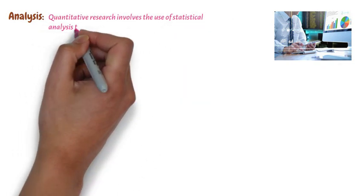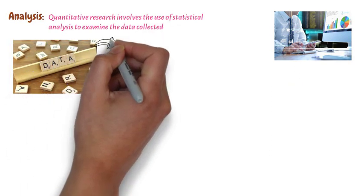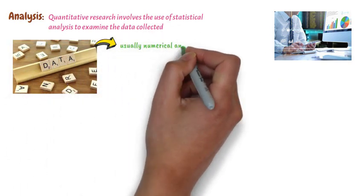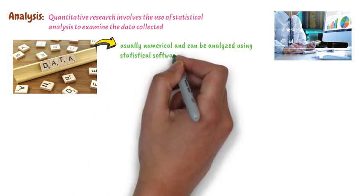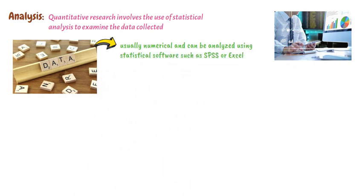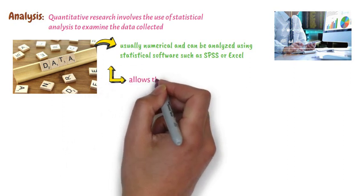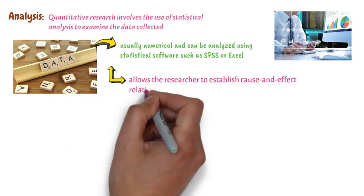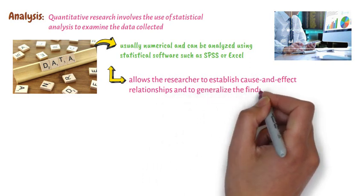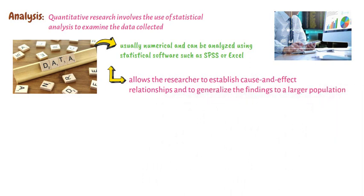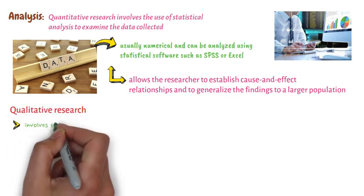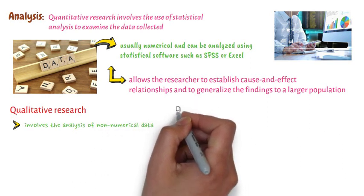In terms of analysis, quantitative research involves the use of statistical analysis to examine the data collected. The data is usually numerical and can be analyzed using statistical software such as SPSS or Excel. This approach allows the researcher to establish cause-and-effect relationships and to generalize the findings to a larger population. In contrast, qualitative research involves the analysis of non-numerical data such as text, images, and video.